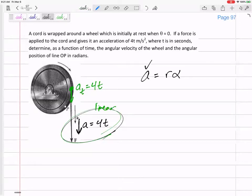If I know the a and I know the distance, my point, that I know the a, you know, I know the a for this point right here on the edge of the wheel is 4t. And I know that point is 0.2 away, then I can find alpha as a function of time. So alpha is 20t.